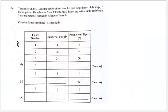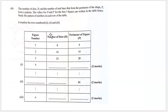Part B says the number of dots D and the number of unit lines forming the perimeter P form a pattern. The values of D and P for the first three figures are given in the table. We need to study the pattern and complete rows one, two, and three. What I always tell students is to first derive your formula for n — once you have that, everything else in the table becomes easier to solve.